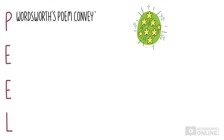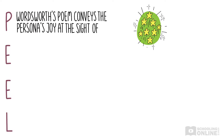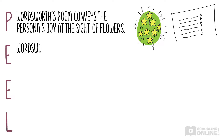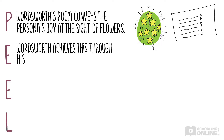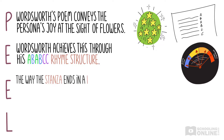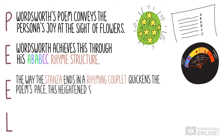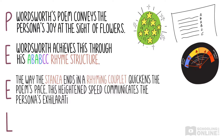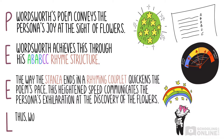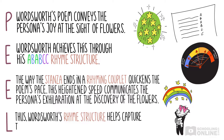Let's put that into a PEEL paragraph again. Wordsworth's poem conveys the persona's joy at the sight of flowers. Wordsworth achieves this through his A-B-A-B-C-C rhyme structure. The way the stanza ends in a rhyming couplet quickens the poem's pace. This heightened speed communicates the persona's exhilaration at the discovery of the flowers. Thus, Wordsworth's rhyme structure helps capture the persona's delight upon seeing the daffodils.